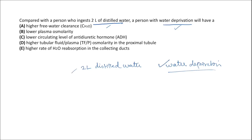The first choice is high free water clearance. Free water formed in the kidneys is reabsorbed in the water-deprived state, whereas it is excreted in the urine when the person has excess water consumption. So in the water-deprived condition, the clearance of free water would be lesser — the first choice is not correct.